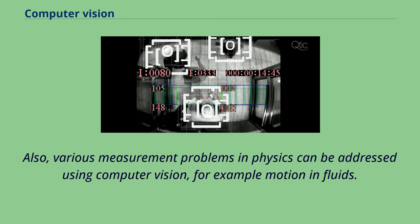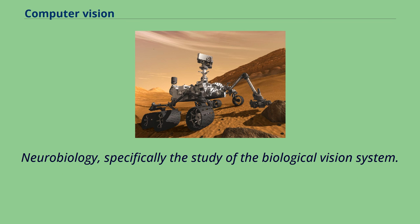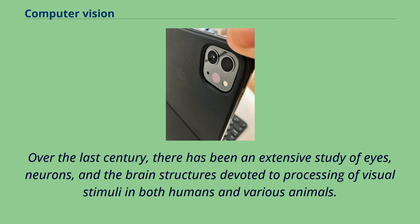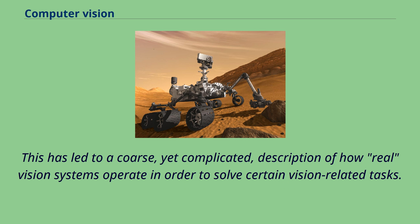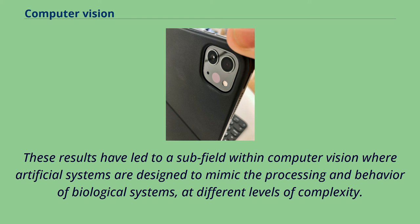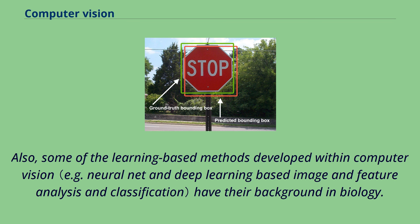Neurobiology, specifically the study of the biological vision system, is another related field. Over the last century, there has been an extensive study of eyes, neurons and the brain structures devoted to processing of visual stimuli in both humans and various animals. This has led to a description of how real vision systems operate to solve certain vision-related tasks. These results have led to a subfield within computer vision where artificial systems are designed to mimic the processing and behavior of biological systems at different levels of complexity. Some of the learning-based methods developed within computer vision also have their background in biology.